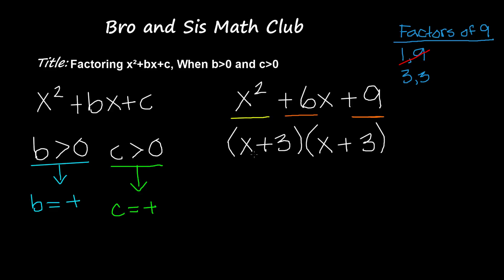So now we're going to use the distribution method to multiply these two binomials to check if our answer is right. First we're going to multiply x times x and x times 3. So x times x gives us x squared and x times 3 gives us positive 3x.